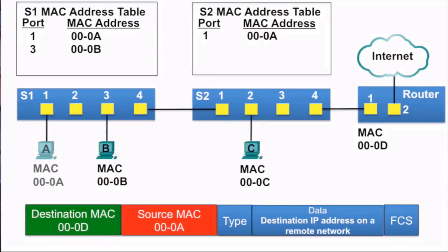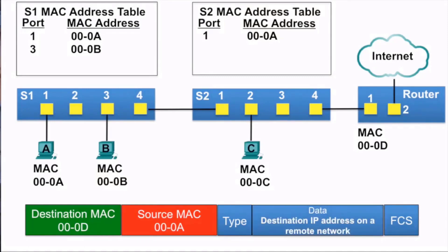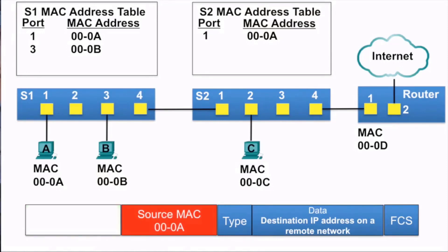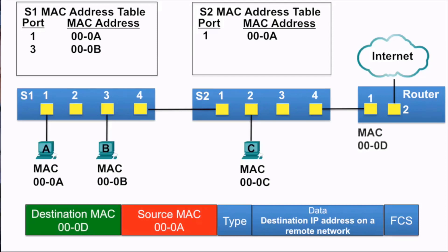In this video, PCA is going to send a packet to the Internet because the destination IP address is on another network. So in this case, the source MAC address is that of PCA, and the destination MAC address is that of the router at 000d.